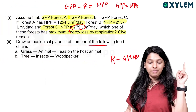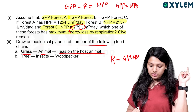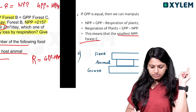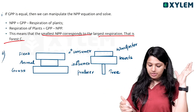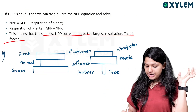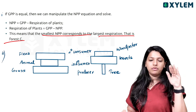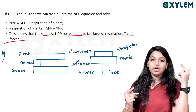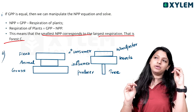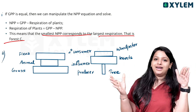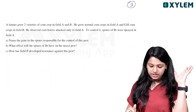Draw an ecological pyramid of numbers for the following food chain: grass → animal → fleas on host animal, and tree → insect → woodpecker. For the grass-animal-fleas chain, it forms an upright pyramid. For tree-insect-woodpecker: there is one large tree, many insects, and fewer woodpeckers — so this forms an inverted pyramid.